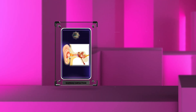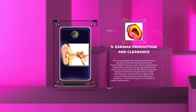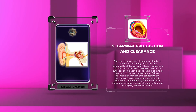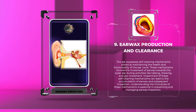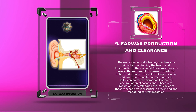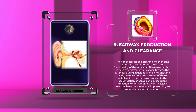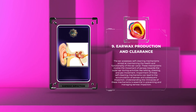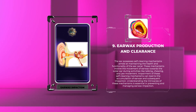The ear possesses self-cleaning mechanisms aimed at maintaining the health and functionality of the ear canal. These mechanisms involve the movement of earwax towards the outer ear during activities like talking, chewing, and jaw movement. Impairment of these self-cleaning mechanisms can lead to the accumulation of earwax and subsequent impaction. Understanding the intricacies of these mechanisms is essential in preventing and managing earwax impaction.